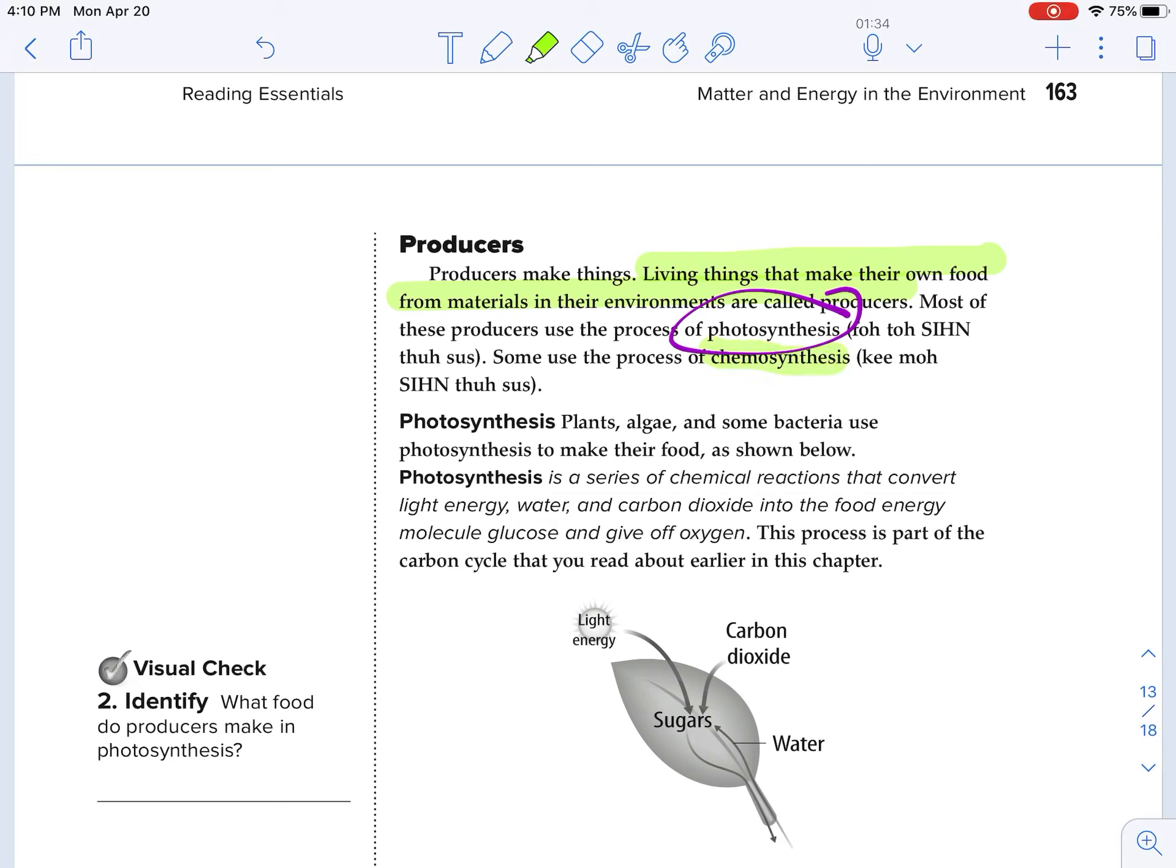Photosynthesis. Plants, algae, and some bacteria use photosynthesis to make their food, as shown below. Photosynthesis is a series of chemical reactions that convert light energy, water, and carbon dioxide into the food energy molecule glucose and give off oxygen. This process is part of the carbon cycle that you read about earlier in this chapter. Sometimes producers are also known as autotrophs. Self-feeders. We are not a producer.